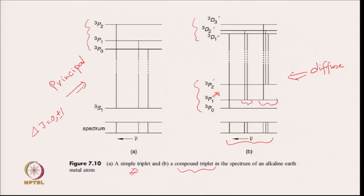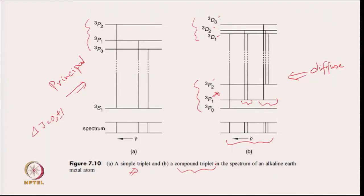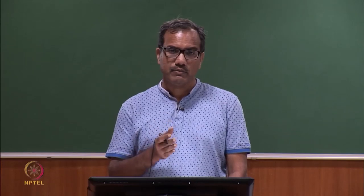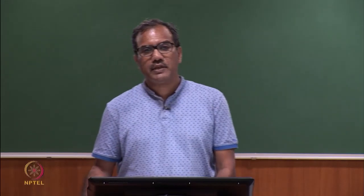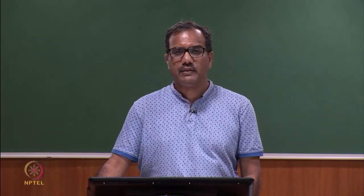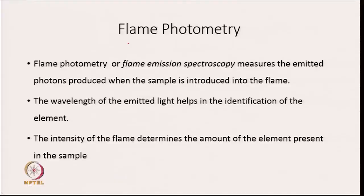This is the way we discuss and understand the spectrum of different elements. Here I have shown the spectrum of alkaline earth metals where we go from S2 to S1P1, or S1P1 to S1D1. Now we move to the techniques based on atomic spectroscopy, known as flame photometry.